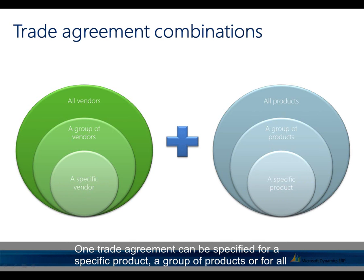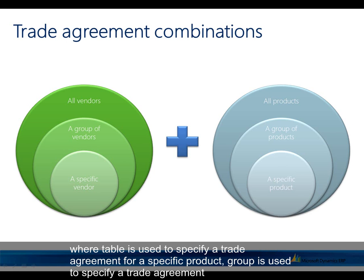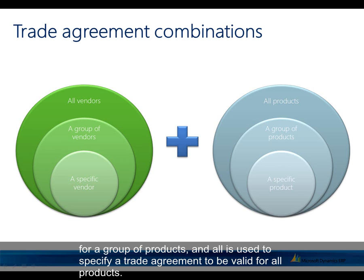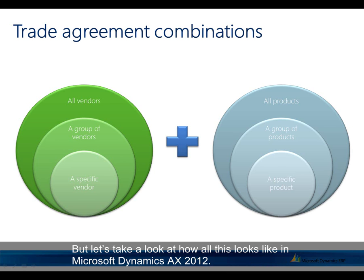One trade agreement can be specified for a specific product, a group of products, or for all products. The concept of table-group-all is used for this purpose: table specifies a trade agreement for a specific product, group for a group of products, and all for all products. As an example, a 10% line discount will be granted from a specific vendor if purchasing more than 100 pieces of product A.